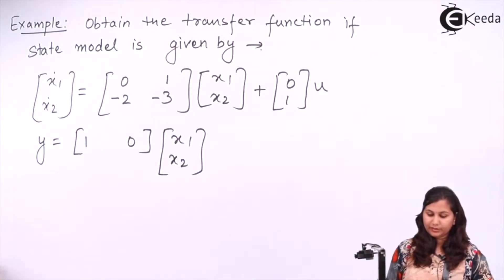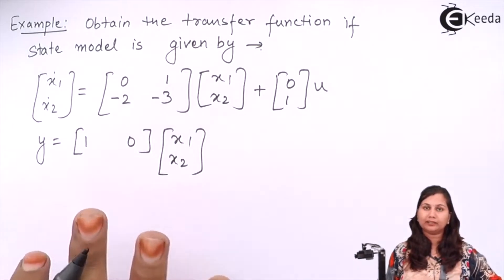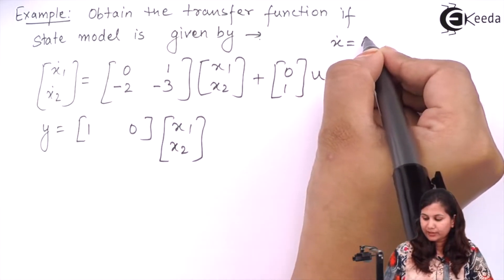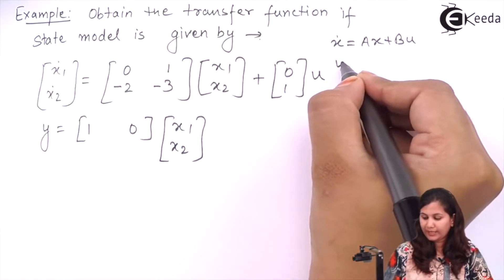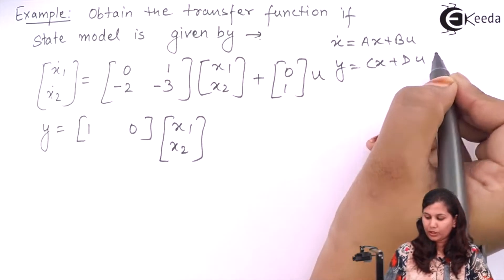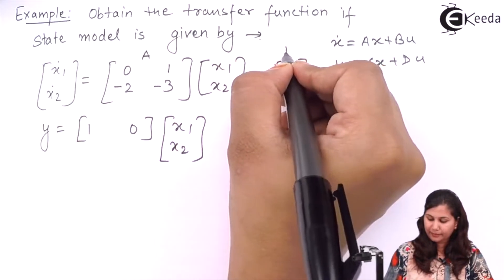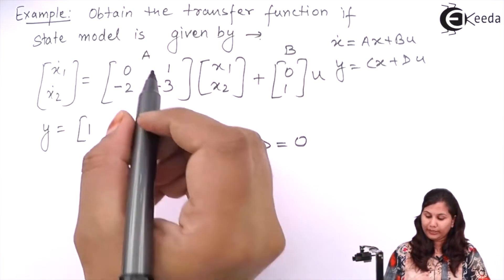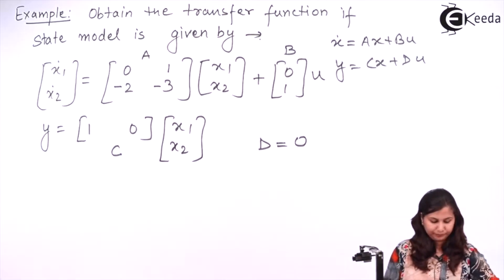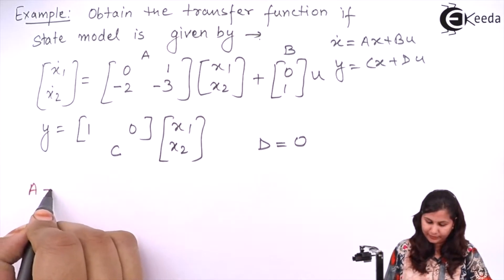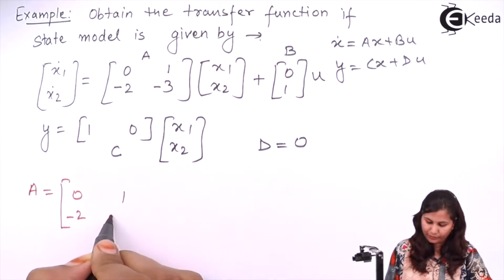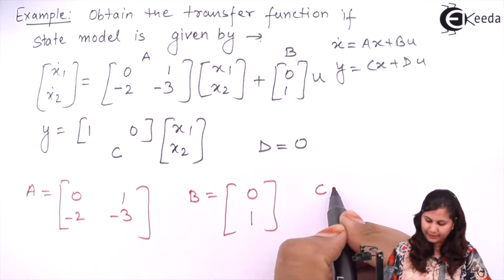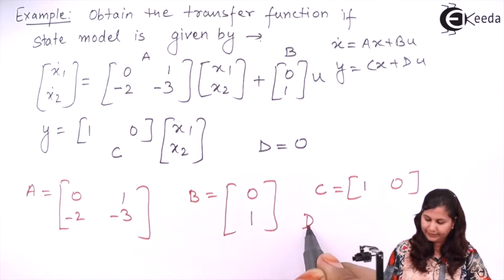Now let's take an example. We are given the state model and have to obtain the transfer function. The state model is: x-dot equals Ax plus Bu, and y equals Cx plus Du. From the given state model, we identify: A = [[0,1],[-2,-3]], B = [[0],[1]], C = [1, 0], and D = 0 since it is not given.